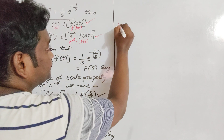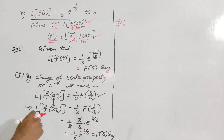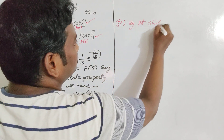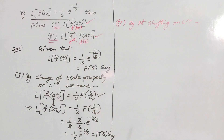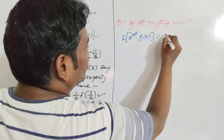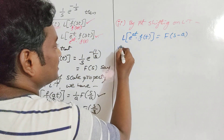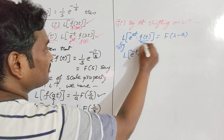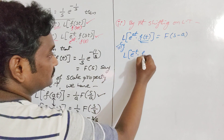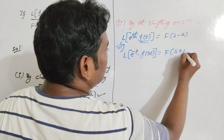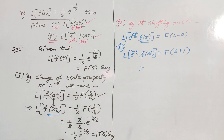Now to get the second one, we apply the First Shifting Theorem. By the First Shifting Theorem on Laplace transforms, L of e to the power at times f of t equals F of s minus a. Writing the given problem, L of e to the power minus t times f of 3t: here our function f of t is f of 3t, and the value of a is minus 1, so we get F of s plus 1.